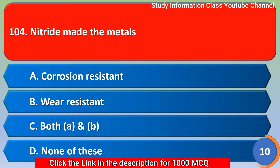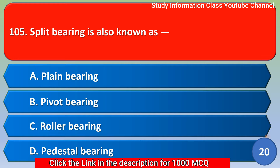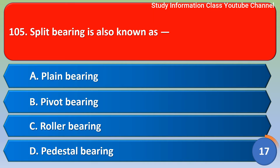Next question: nitriding makes metals — option A: corrosion resistant, option B: wear resistant, option C: both A and B, option D: none of these. The correct answer is option C, both A and B — that is, corrosion resistant and wear resistant.